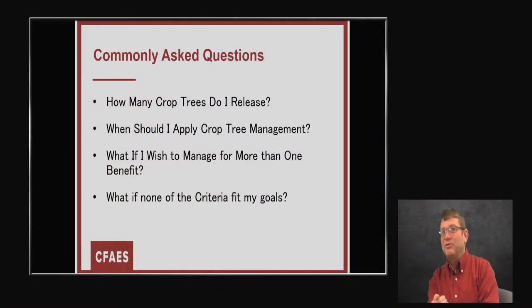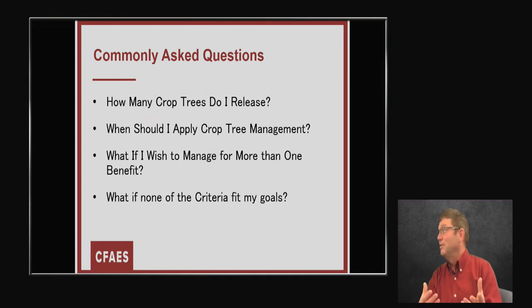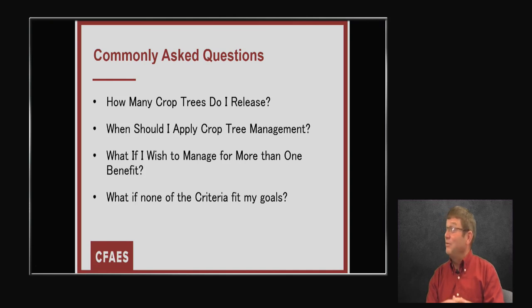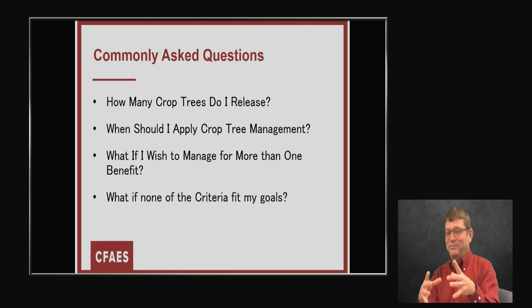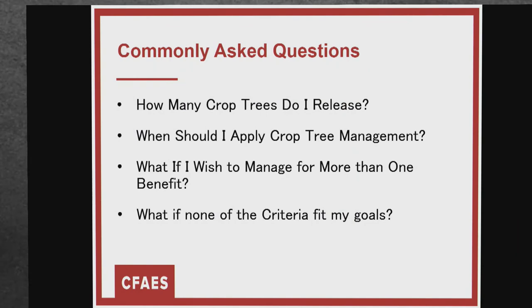How many would you release? A mature forest has about 50 big trees per acre, so you don't need to release a lot more than 50 an acre. Find your very best trees — if you only have 10 really good trees per acre, release those 10 best. It's usually best to do this when trees are fairly young, around softball to basketball size in diameter. In a big mature forest you probably want to use another technique. If none of the criteria we talked about apply, go back to why you own the woods — for example, just pick the best sugar maples and give them some space for maple syrup production.